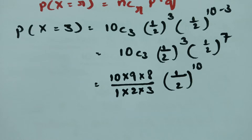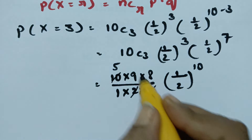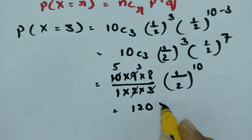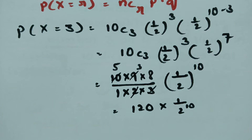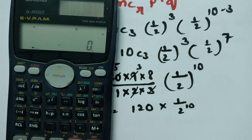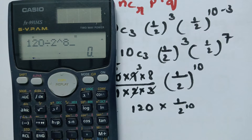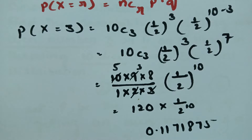Combining the powers gives (1/2)^10. Calculating 10C3 gives 120, so the expression becomes 120 divided by 2^10. The probability of getting an even number exactly 3 times when 10 dice are thrown is 0.1171875.